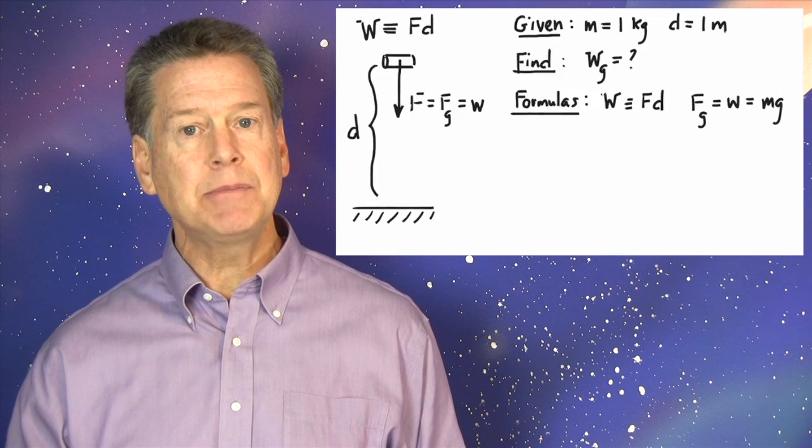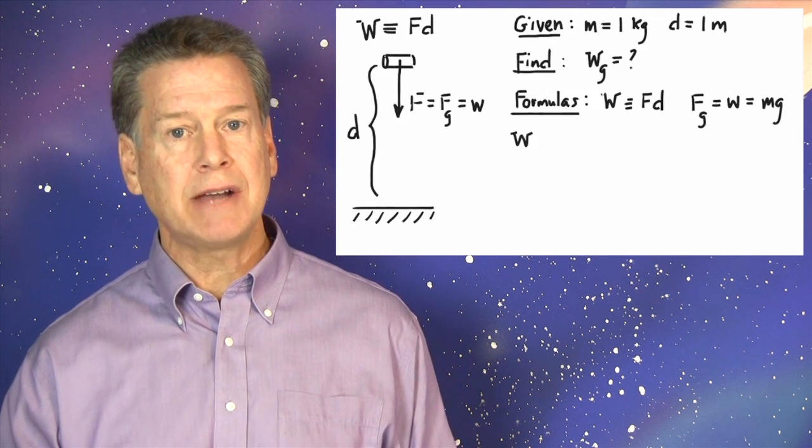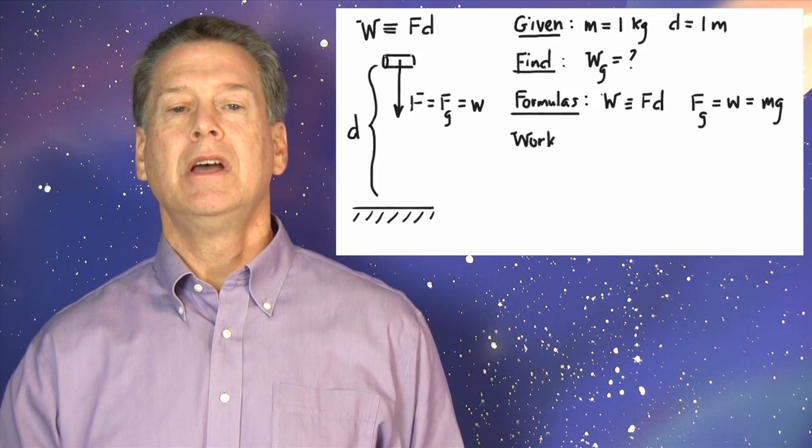F equals F sub G, that is, weight, which equals M times G, the acceleration due to gravity.